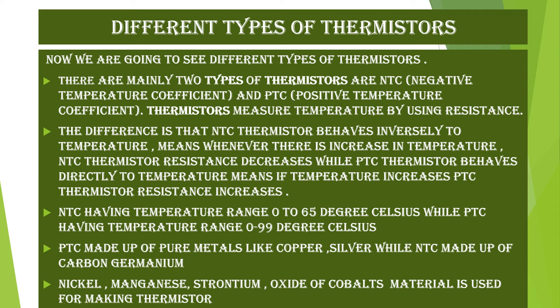PTC thermistors are made up of pure metals like copper and silver, while NTC thermistors are made up of materials such as carbon, germanium, nickel, manganese, and strontium oxide of cobalt.